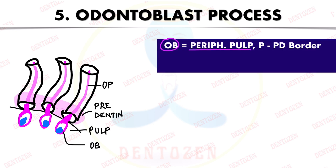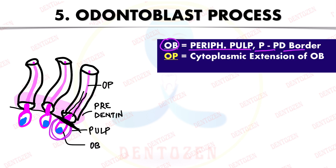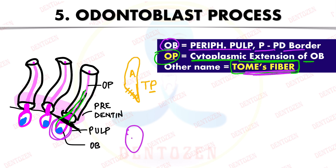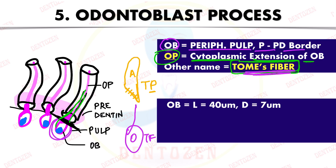The odontoblast is the cell which forms dentine, present in the peripheral pulp near the pre-dentine and pulp border. Its process goes inside the dentinal tubule and is called the odontoblastic process — the cytoplasmic extension of the odontoblast cell. Another name for this process is Tom's fiber. In the exam, Tom's process is actually the process of the ameloblast cell, responsible for rod and interrod enamel — that is the difference between Tom's fiber and Tom's process.